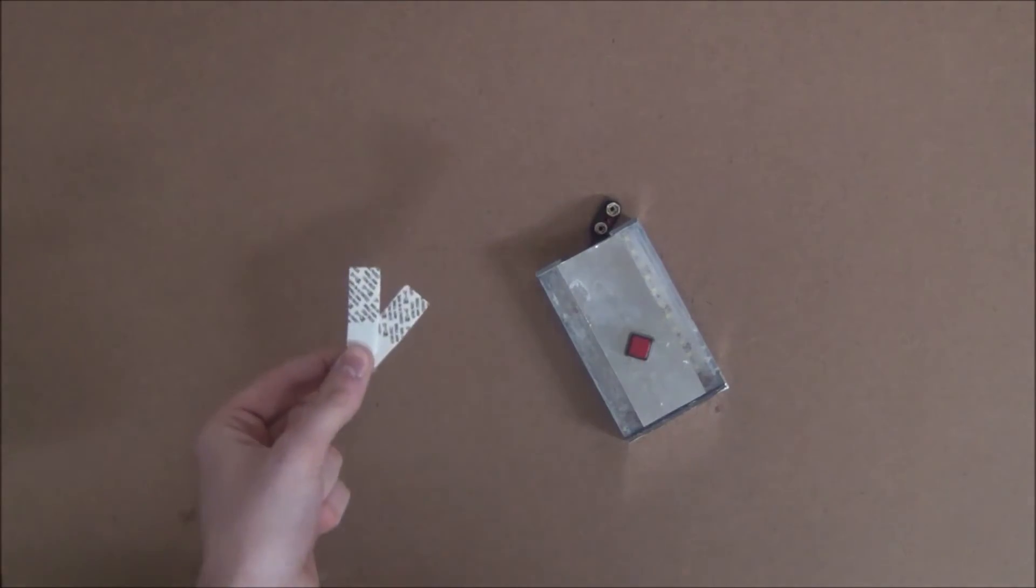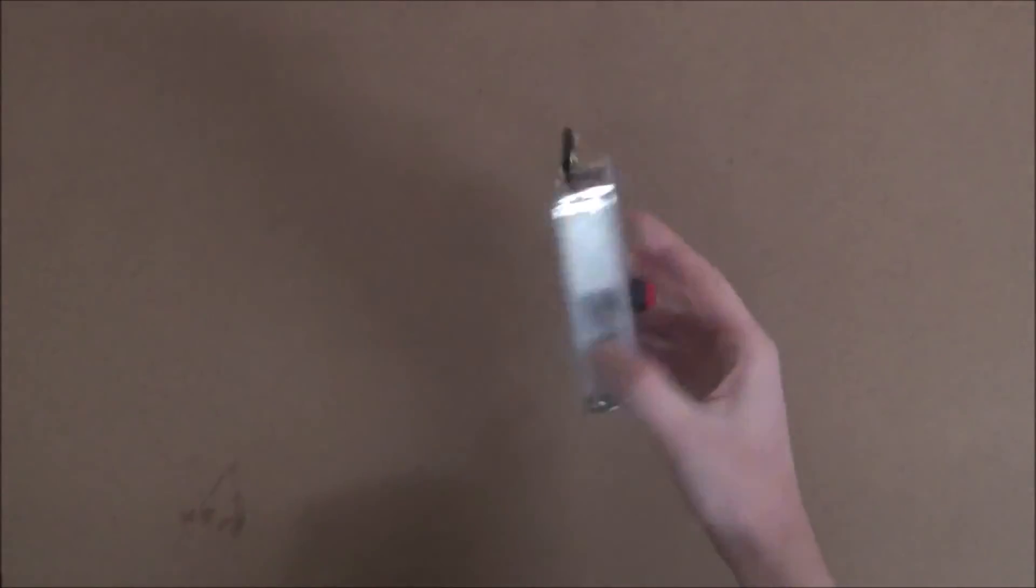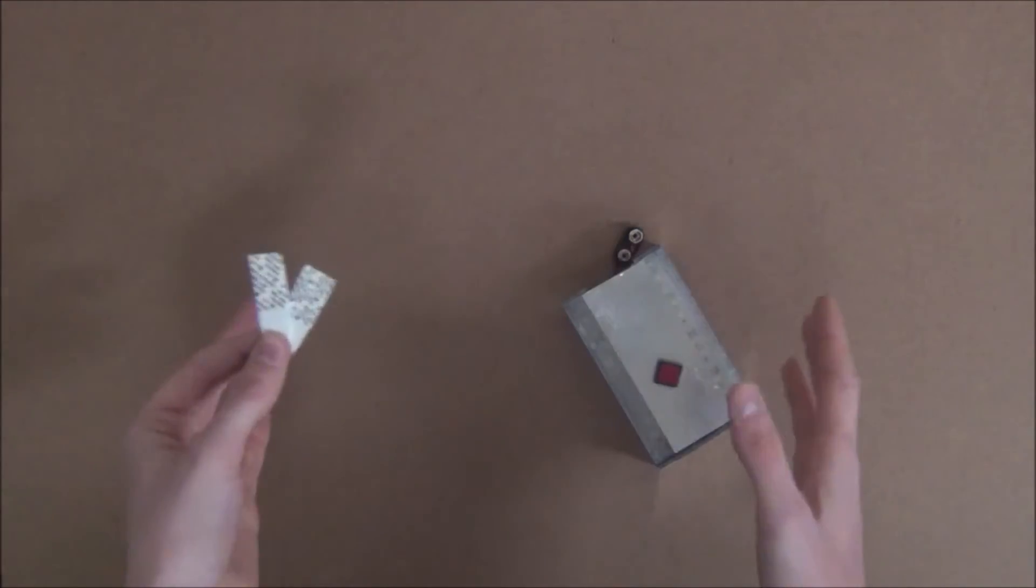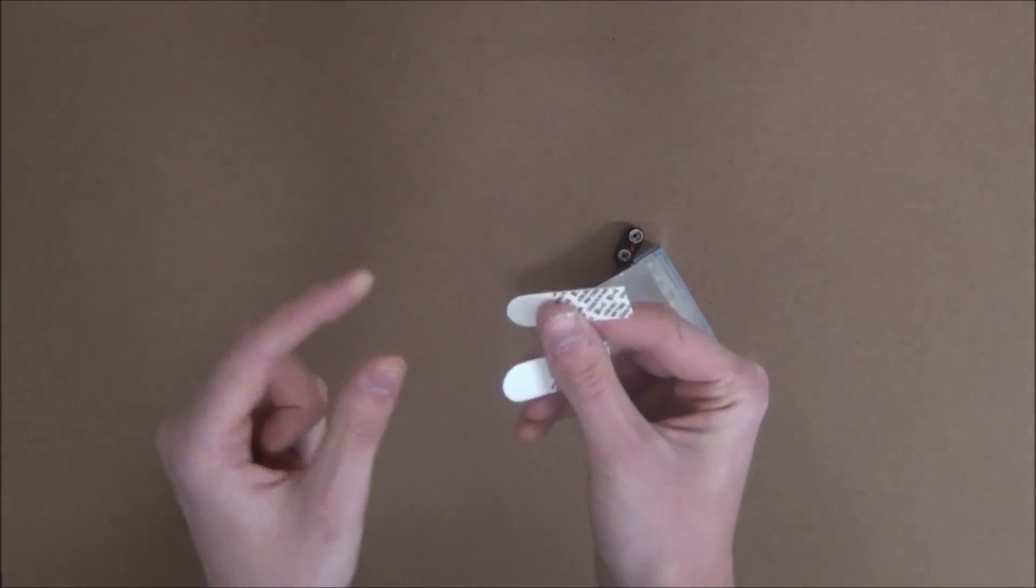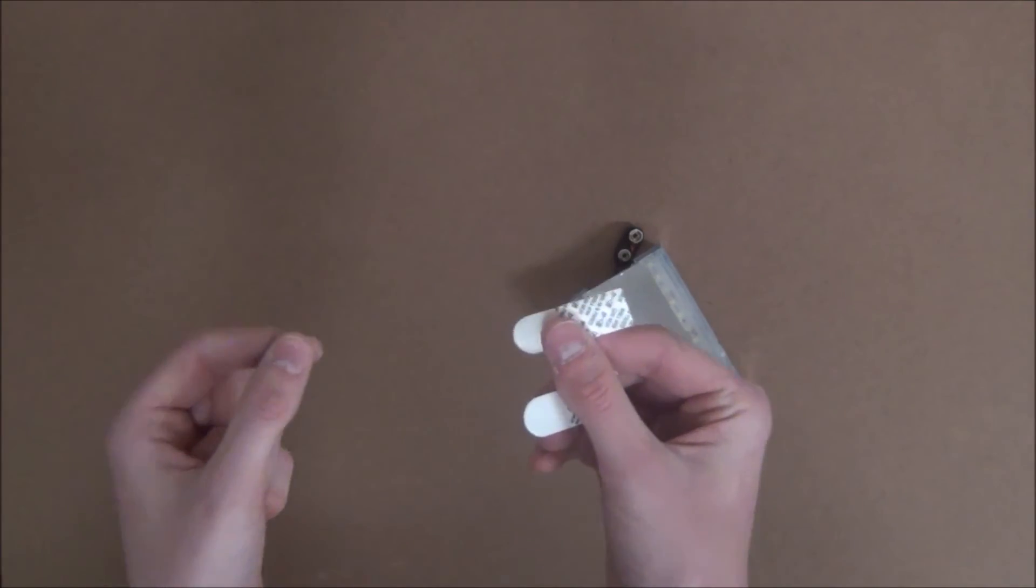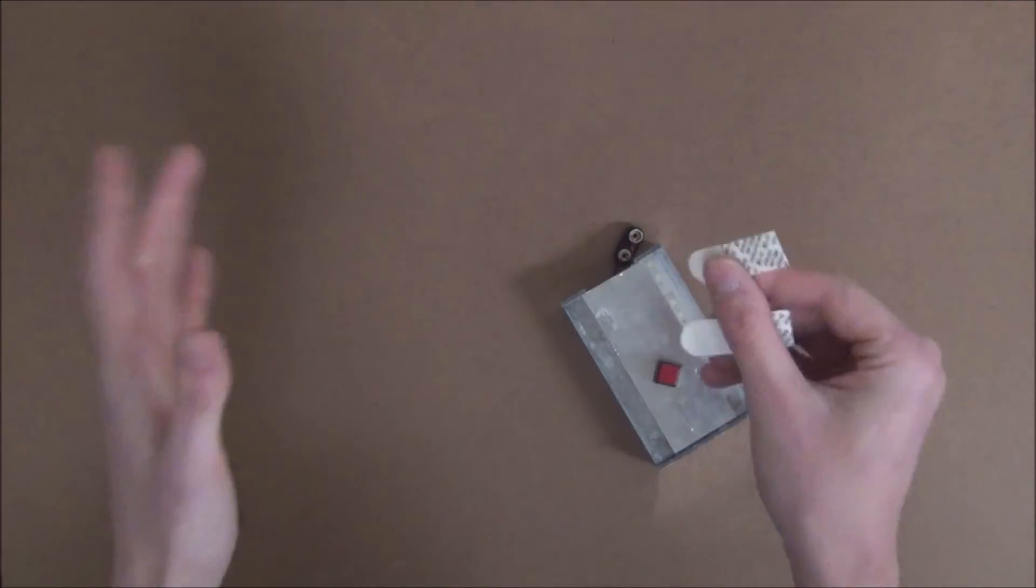I'll now take two command strips and stick them to the back of the light. These strips will allow us to mount the light basically anywhere, and if you ever want to move it, all you have to do is pull the tab on the bottom of the sticker, and it'll come off the wall without leaving a mark.